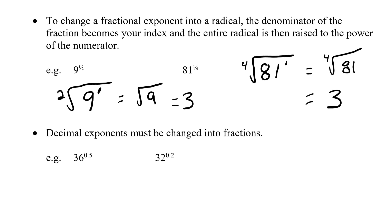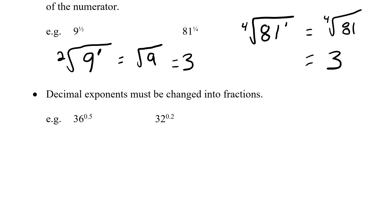Well, what happens when our exponents are decimals? Essentially we have to change them into fractions. So I know that 0.5 as a fraction is 1 half. So we're basically saying 36 to the 1 half. Take my base, open up the root sign. Square root 36. Square root of 36 is 6.